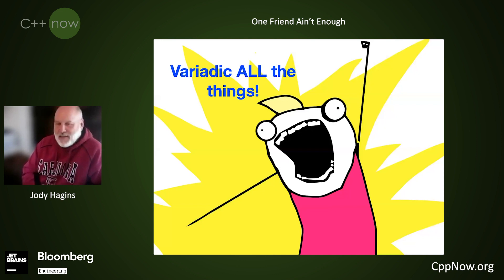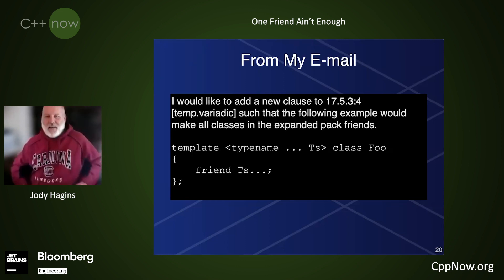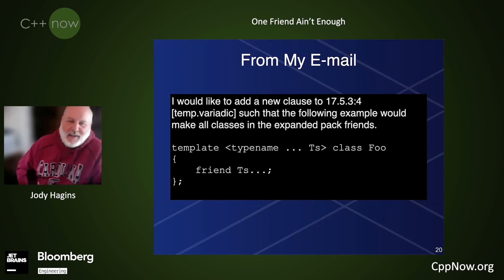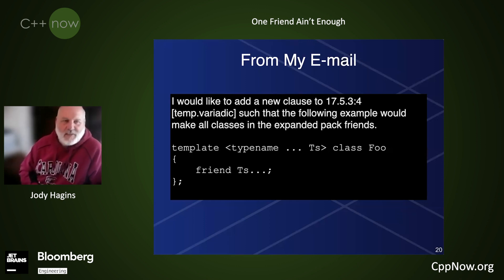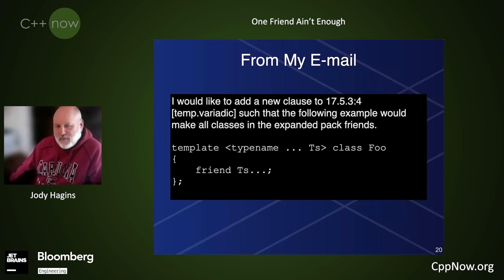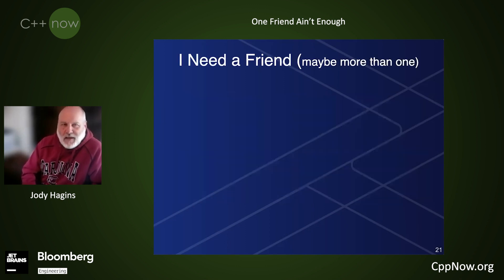This is the first part of an email that I sent to the std-proposals mailing list in January of 2020. Basically, I'd like to add a new clause to section 17.5.3 colon 4, such that the following example would make all classes in the expanded pack friends. It looks kind of simple enough. But it's been almost a year and a half since then, and it's my fault — I need a friend, or maybe more than one.